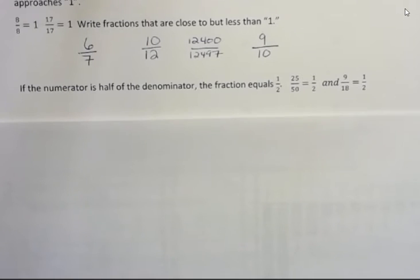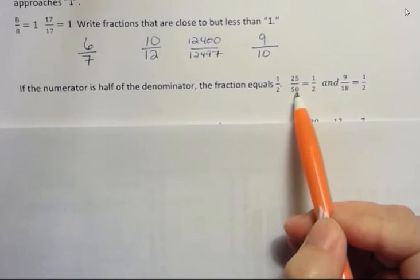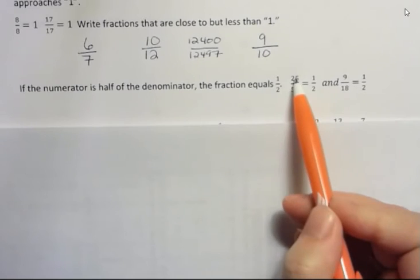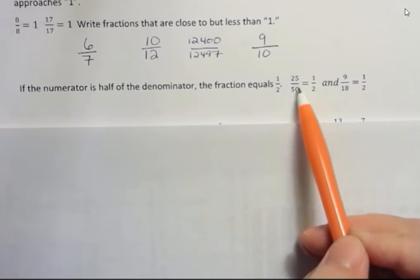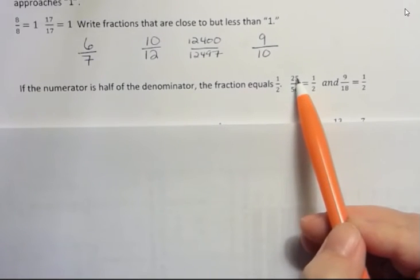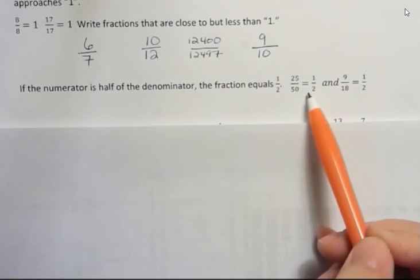And then if the numerator is half of the denominator, then the fraction equals 1 half. So for instance, 25 is half of 50. That's 1 half, right? That's because 50 divided by 2 is 25. So we have exactly 1 half.